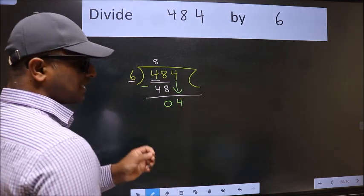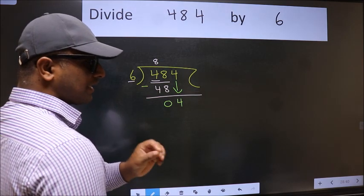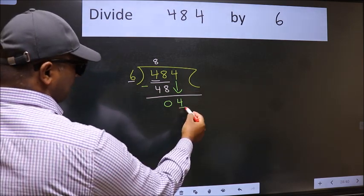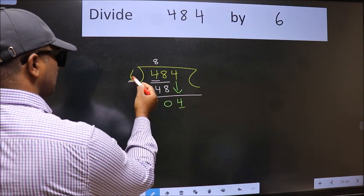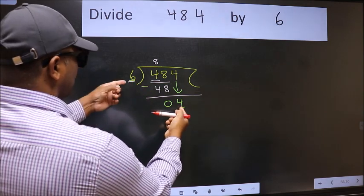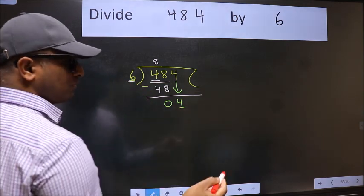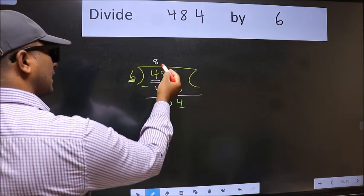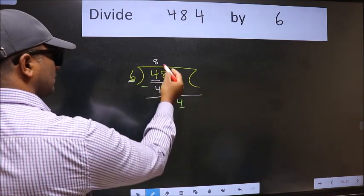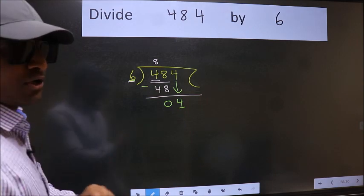After this step, the mistake happens. And the mistake is this. Here we have 4 and here 6. 4 is smaller than 6. So what many do is, they directly put dot, take 0. Which is wrong.